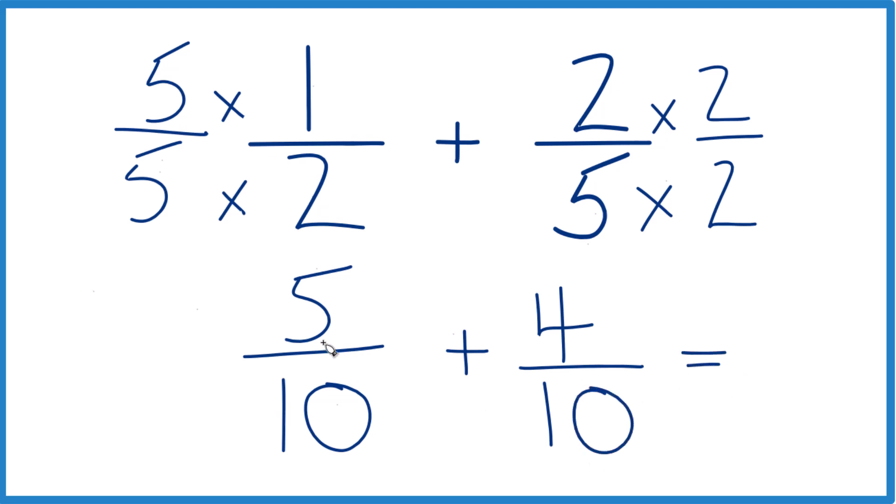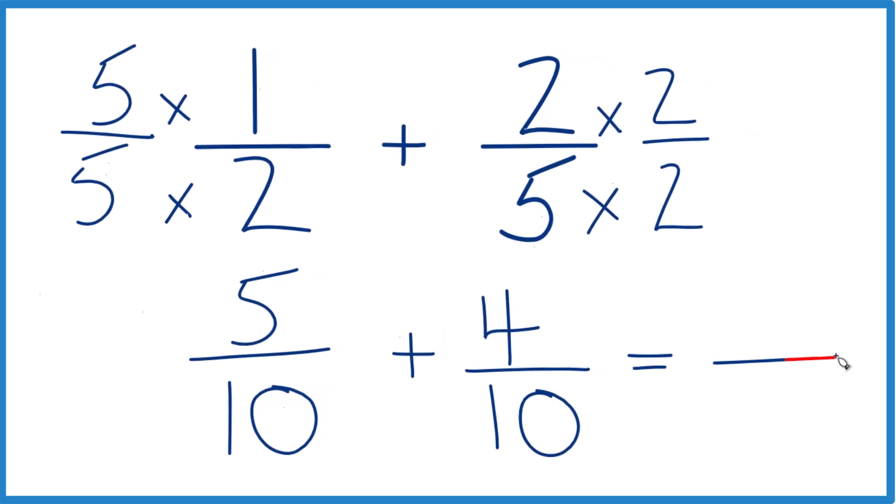So now, same denominator, just going to bring that across like this, keep that as ten, and add the numerators. Five plus four equals nine, and we end up with one-half plus two-fifths. That equals nine-tenths.